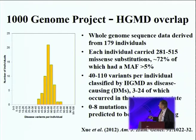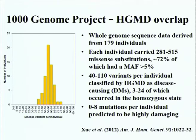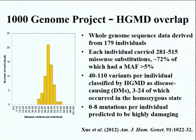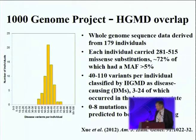We ascertained that each individual carried between about 280 and 500 different missense substitutions. About 70% of these had a minor allele frequency of more than 5%, so these are clearly not likely to be mutations of major effect. Between 40 and 110 variants per individual were classified by HGMD as either disease-causing or disease-associated. Interestingly, between 3 and 24 of these occurred in the homozygous state, and up to 8 mutations per individual were predicted to be highly damaging.